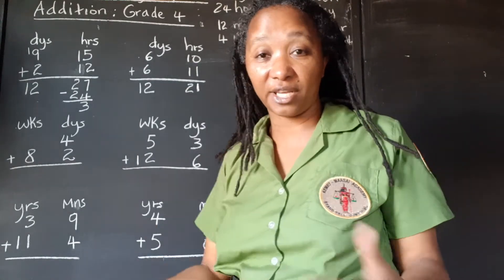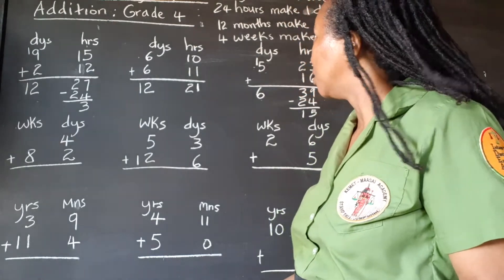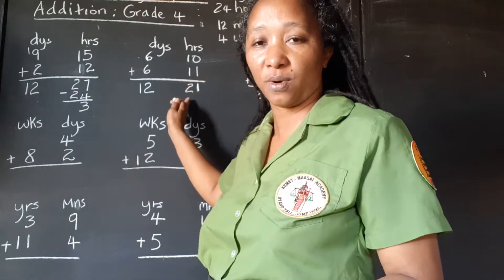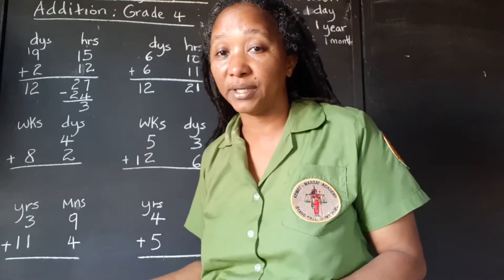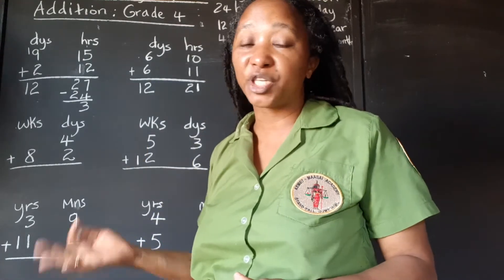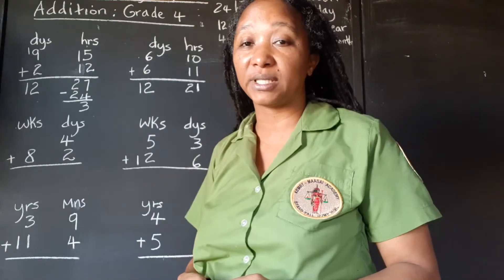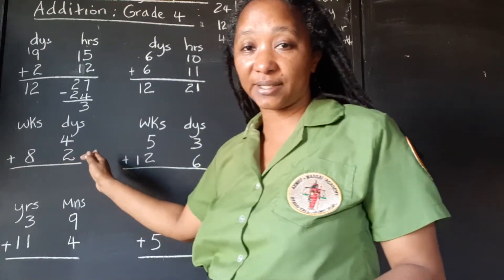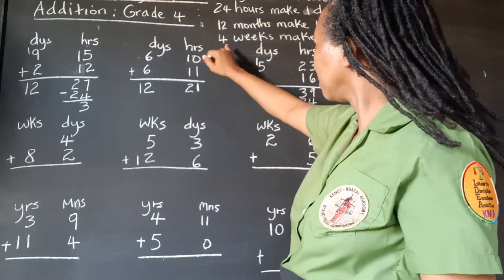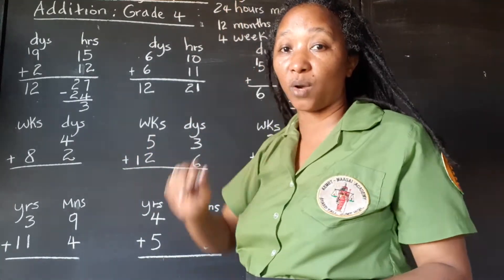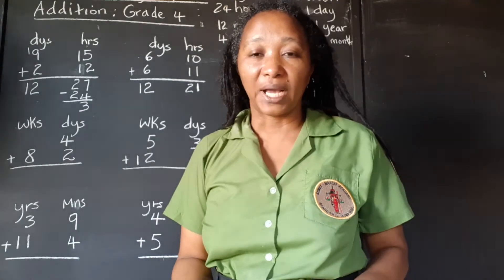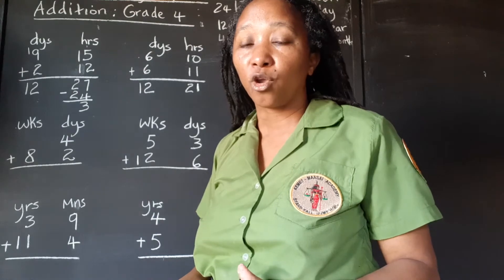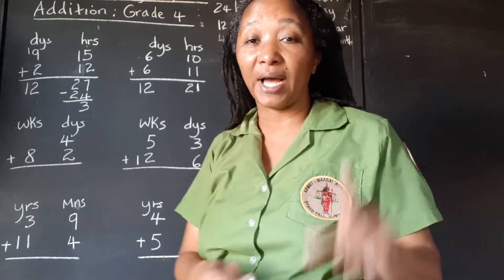Are you getting the gist of it? So once we have less than 24, we can leave it in the hours. If we have 24 or more hours, we have to change it over to days. Remember, there are 24 hours in one day. Now we go to the weeks and days. Remember, there are 7 days in one week. So that means we can't have more than 6 over in the days, because once you get 7 you're going to have to transfer that over as one week.